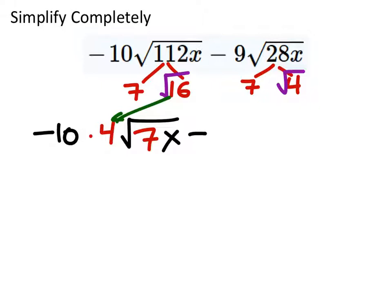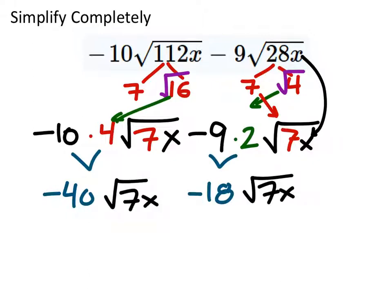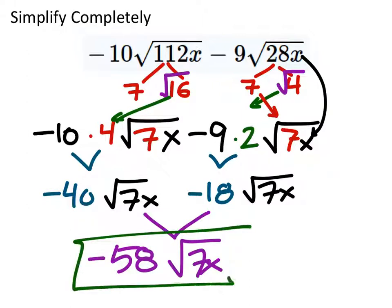And this is minus. We've got a 9 in front. I'm going to take that square root of 4 — it's a perfect square — and multiply it by the negative 9. Square root of 4 is 2. Now I've got the square root of whatever was left, the 7 and the x. Now we have two square roots that are the same — the square root of 7x for both terms. Negative 10 times 4 is negative 40; negative 9 times 2 is negative 18. Combined: negative 40 and negative 18 of the square root of 7x gives us negative 58 square root of 7x. That's about as far as we can simplify.